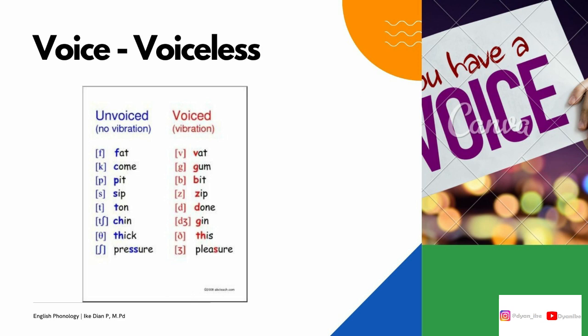Continuing to voiced sounds, we have: V for 'fat,' G for 'gum,' B for 'bit,' Z for 'zip,' D for 'done,' J for 'gin,' TH for 'this,' and J for 'pleasure.' So those are the voiced sounds.